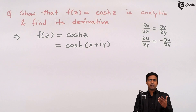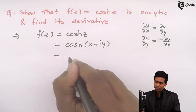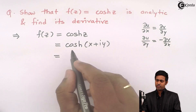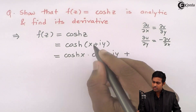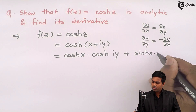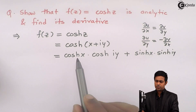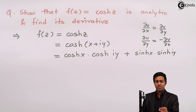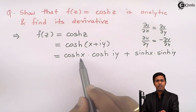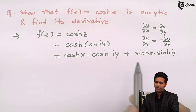We are converting z in terms of x and y so that we can separate the real and imaginary parts. The formula for cosh(x + iy) expands as cosh(x)·cosh(iy) + sinh(x)·sinh(iy). You should know this formula to expand cosh(a + b). It is similar to the trigonometric identity cos(a+b) = cos(a)cos(b) − sin(a)sin(b), but for hyperbolic functions the sign is positive: cosh(a)cosh(b) + sinh(a)sinh(b).